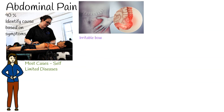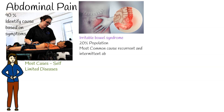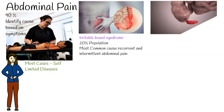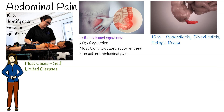Irritable bowel syndrome, affecting up to 20% of the population, is the most common cause of recurrent and intermittent abdominal pain. About 15% of people have more serious underlying conditions such as appendicitis, leaking or ruptured abdominal aortic aneurysm, diverticulitis, or ectopic pregnancy.